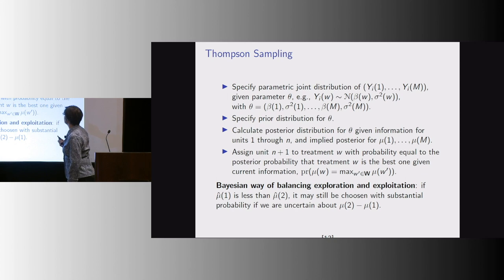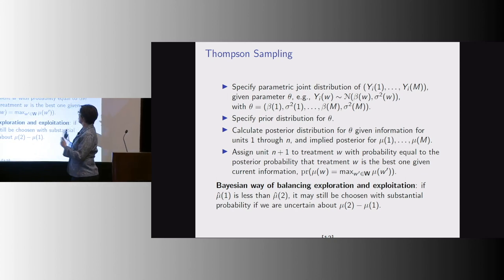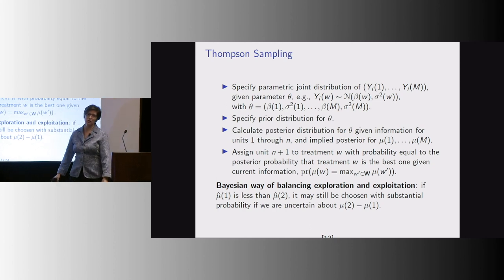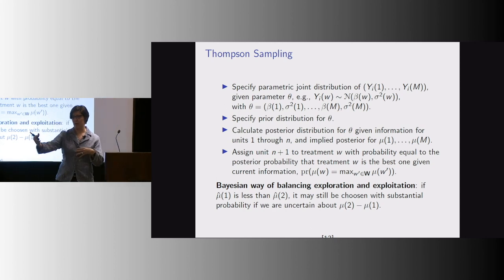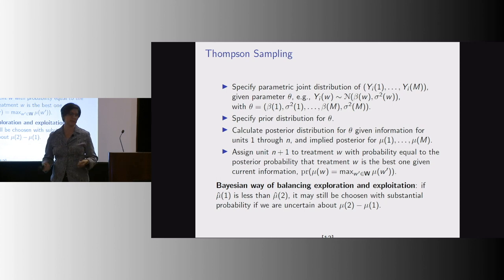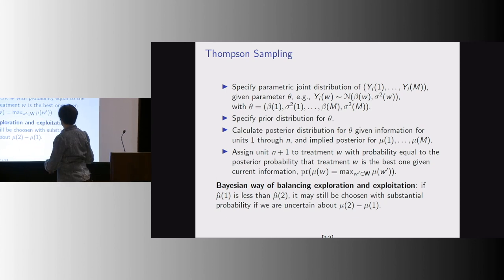The one I prefer, and that we show works a lot better in practice in our simulations, is called Thompson sampling — a more Bayesian perspective. For each arm you have a posterior belief about what's best, and you assign the arms according to the probability that arm is best. So at this moment, if I think arm A is best with probability 0.7 and arm B with 0.3, I use those probabilities to assign. There's a bunch of work showing that is a good heuristic.